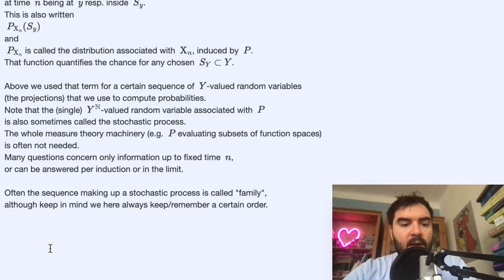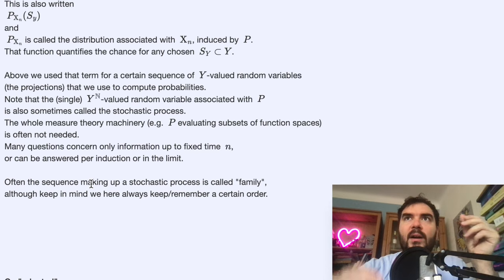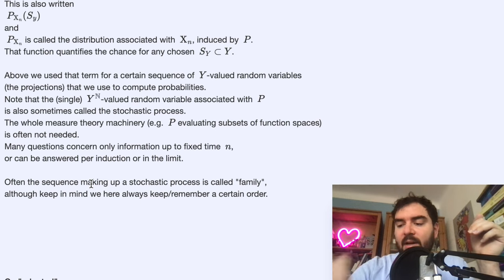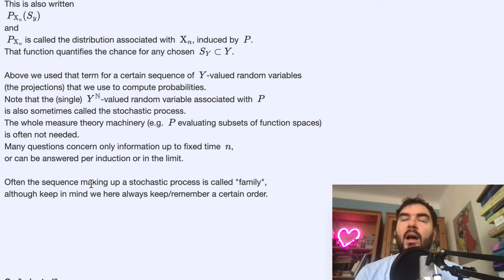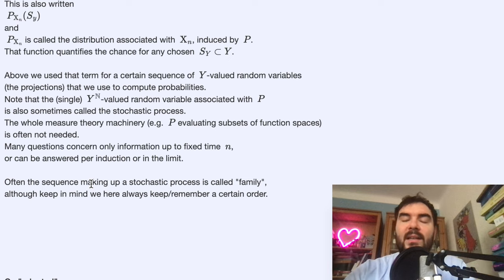As a last note: a stochastic process is sometimes defined as a family or set of random variables, but from a technical perspective this is a little misleading because we always talk about a sequence where the random variables have a particular order. The family has an index set and you have to remember the order. A family indexed by ℕ is just a sequence. But in general, especially without the axiom of choice, not all sets can be well-ordered — so you should not just speak of a 'set' of random variables if there is necessarily an order there. But that's just a nitpicking comment.